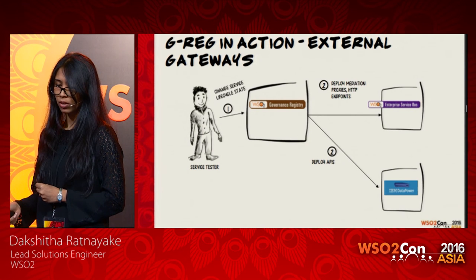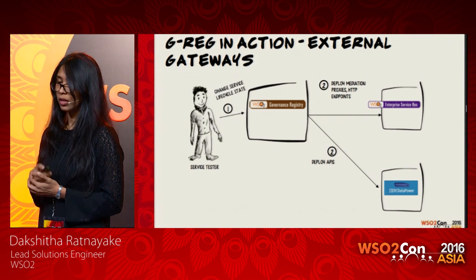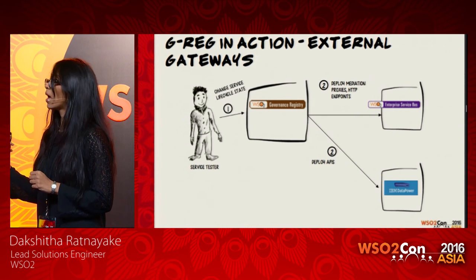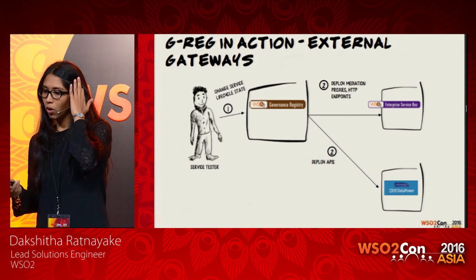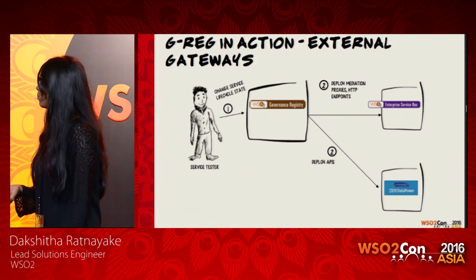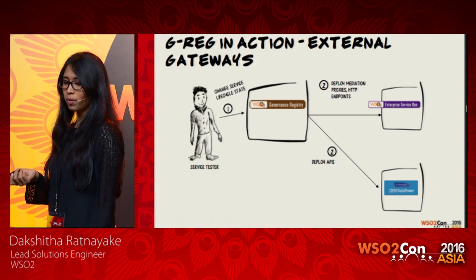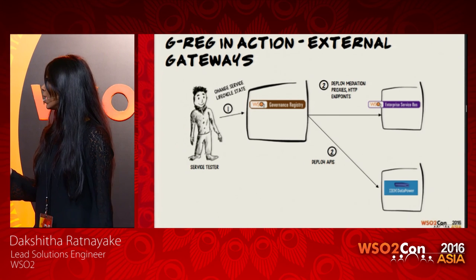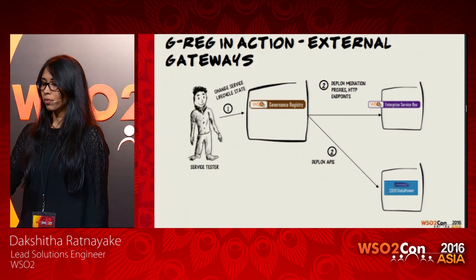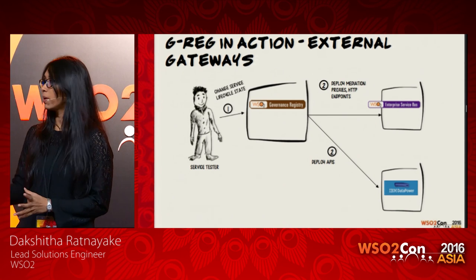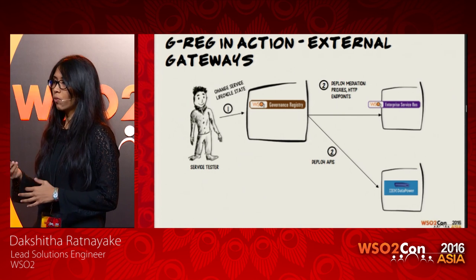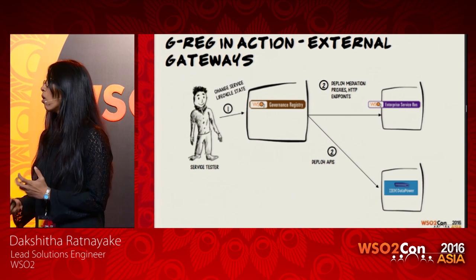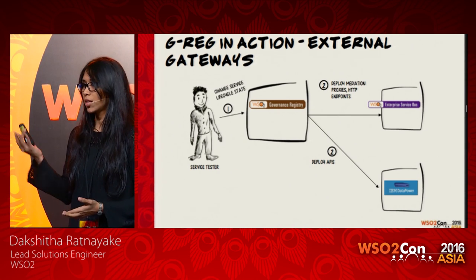The next use case was integration with external gateways. This customer was using both the ESB and IBM DataPower — the ESB for service mediations and transformations, and IBM DataPower as their API gateway. They wanted to create services in the governance registry and publish or propagate API information to both of these systems. The key capability to highlight here is the governance registry's ability to integrate not only with WSO2 products but also with products by other vendors such as IBM DataPower.